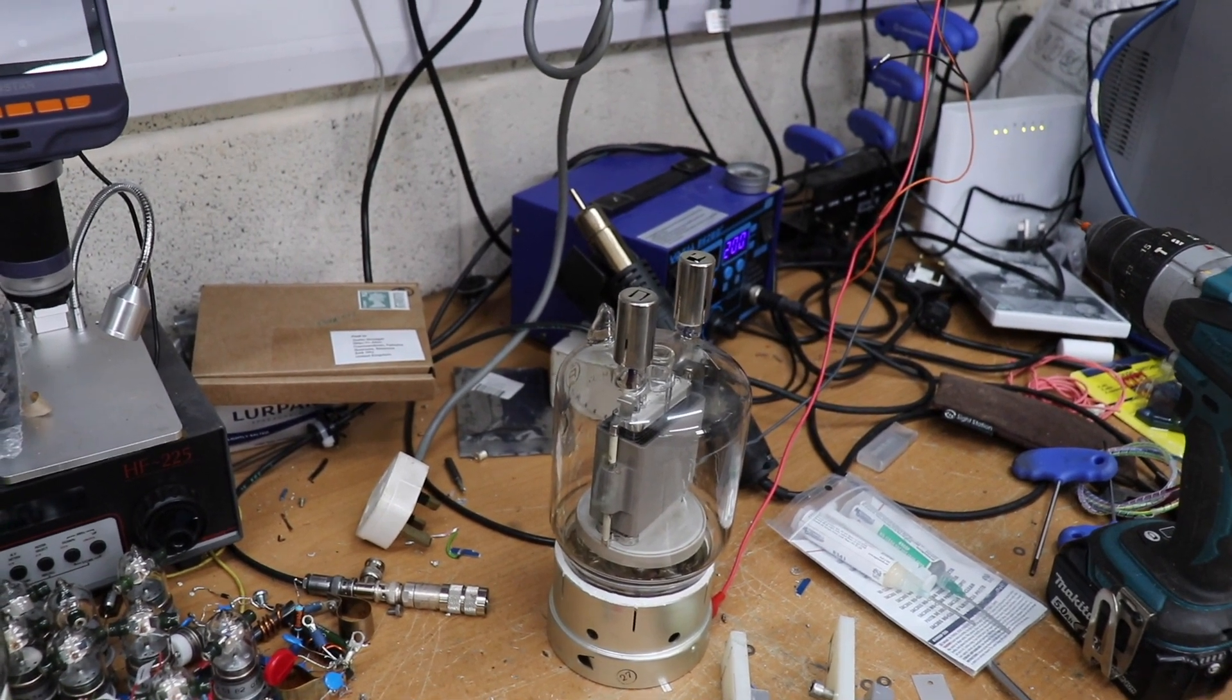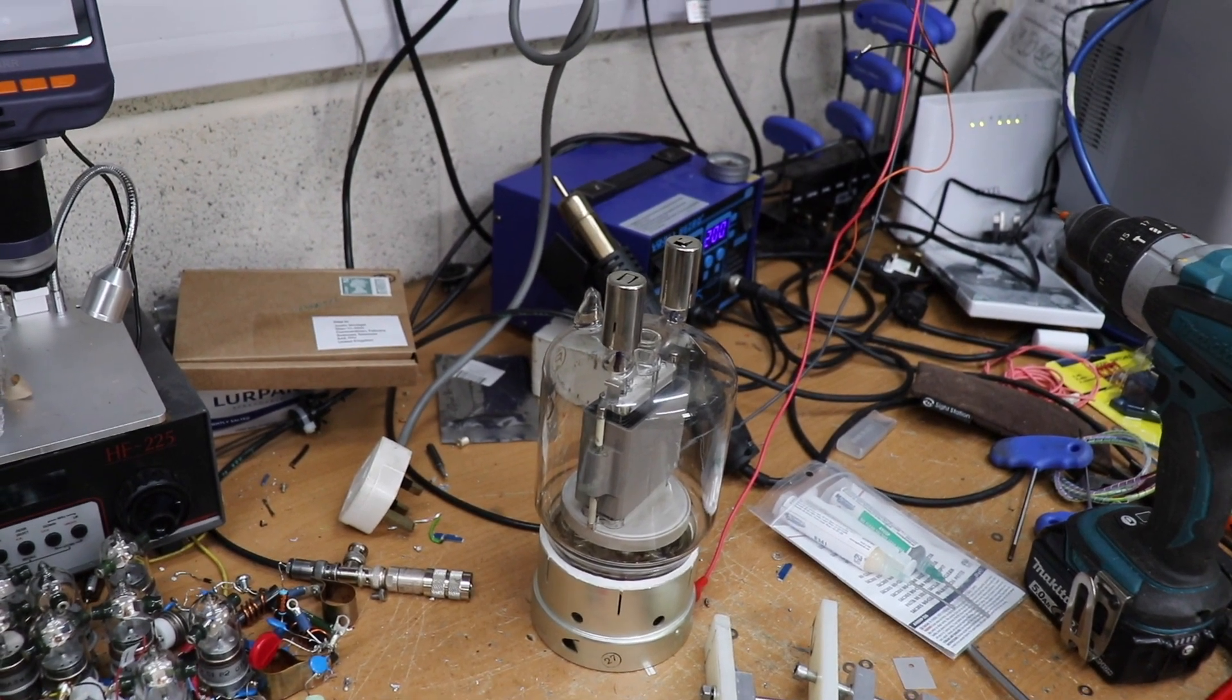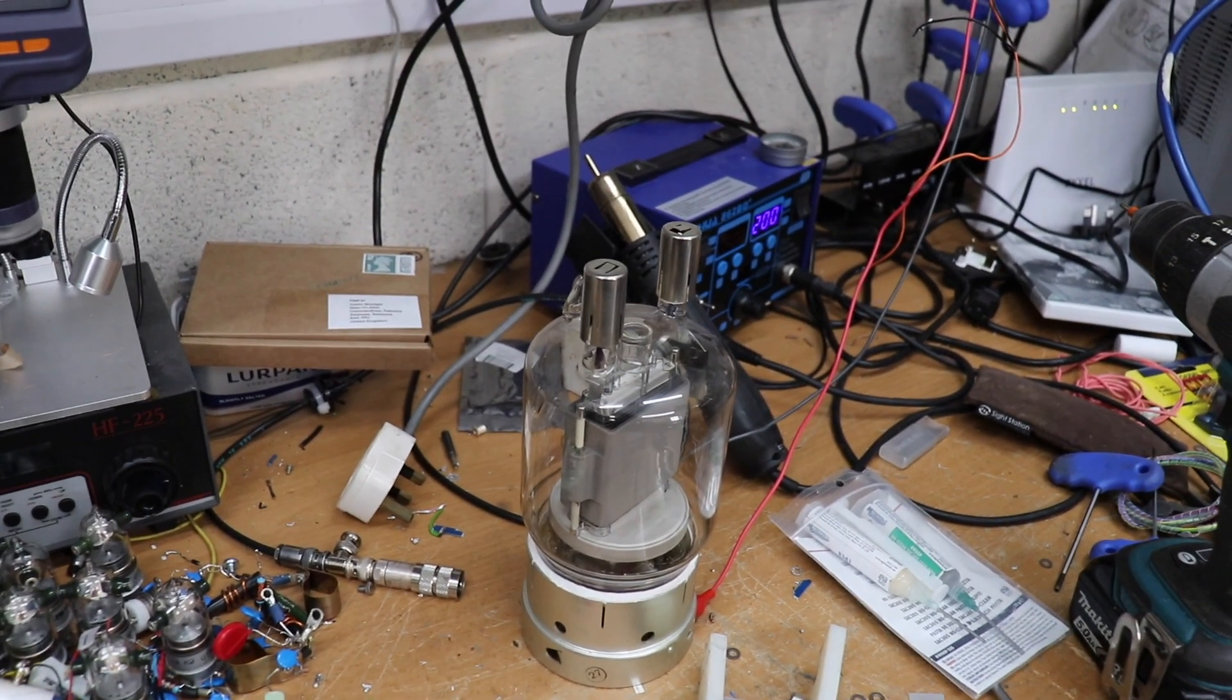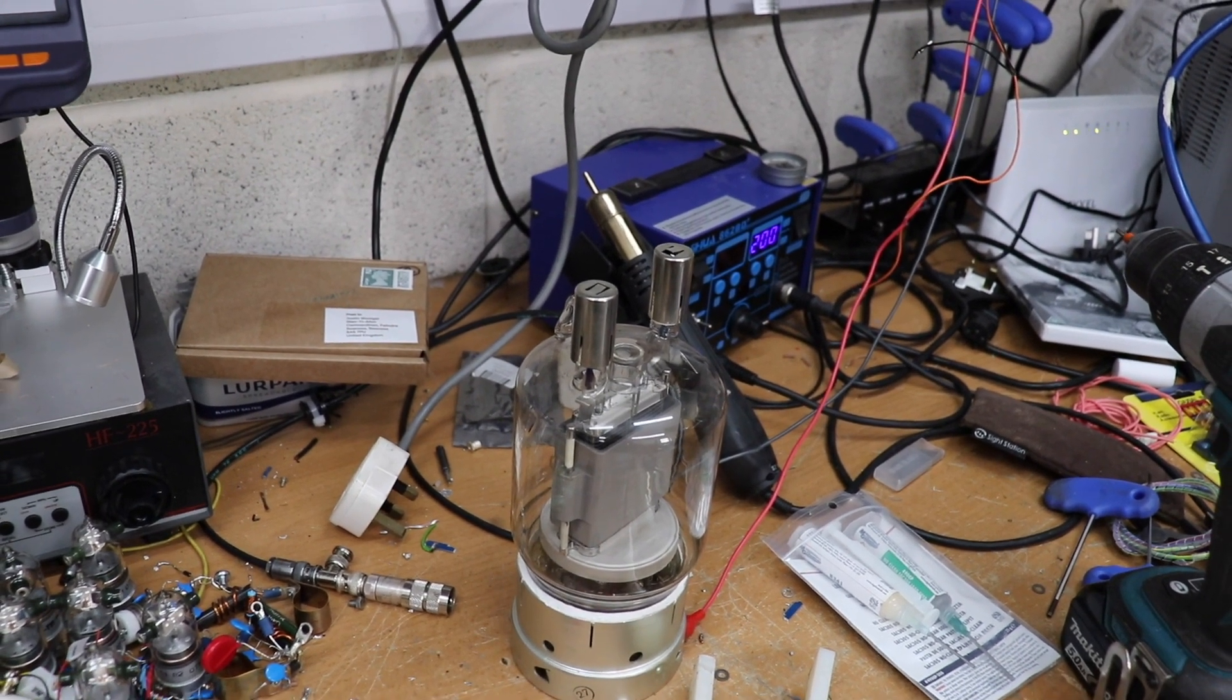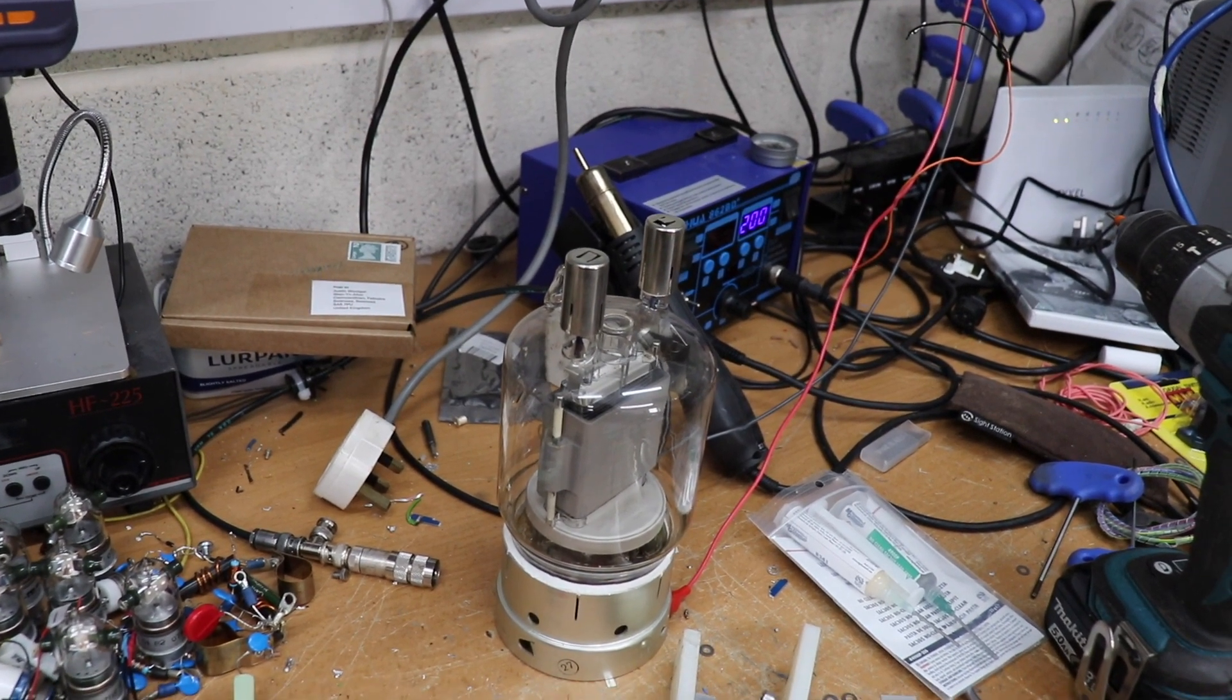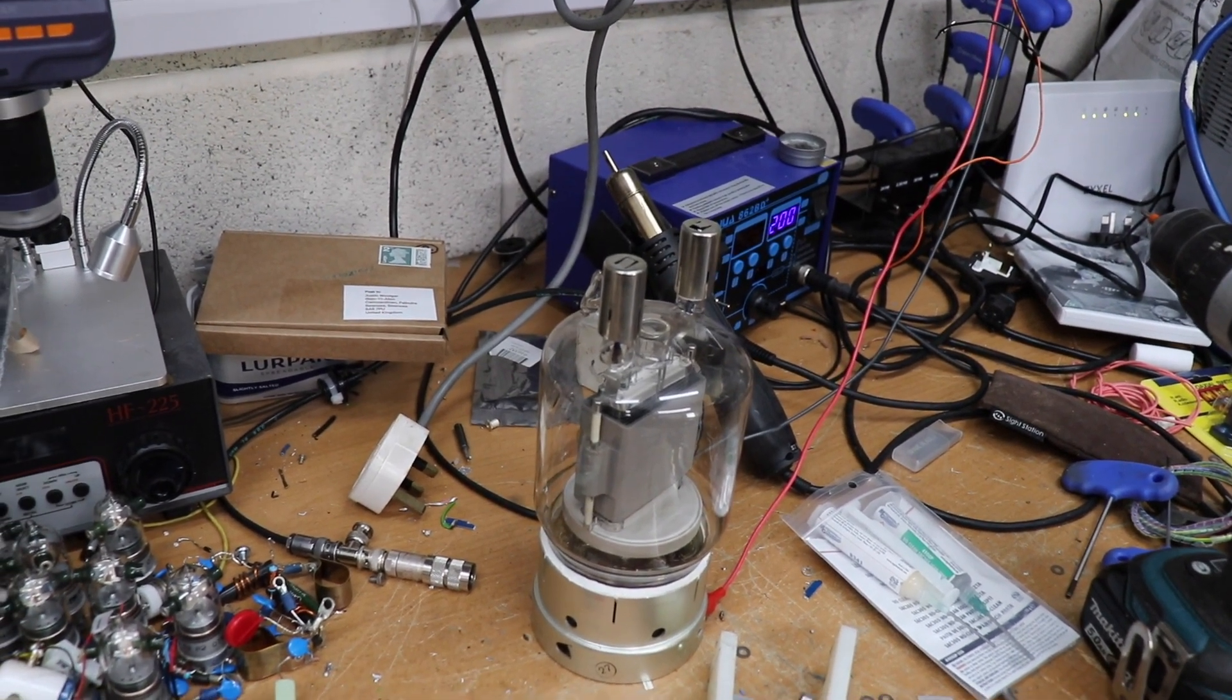Next up, the grid 3 suppressor grid - that's not such a bad problem because that's usually just grounded, not a problem. There are options for modulating these tubes and we did a video of a Russian transmitter which used suppressor grid modulation. But anyway we're talking about linear amps so suppressor grid goes to earth.